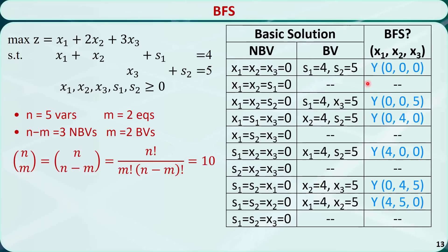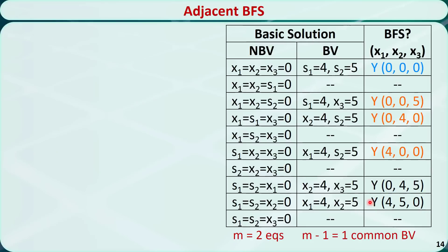Plugging the non-basic variables into the two equations and solving, you will find there are 6 basic feasible solutions and the others are infeasible. For the first BFS, with m equal to 2 equations we need m-1 equal to 1 common basic variable. The basic variables are s1 and s2. Three other BFSs share s1 or s2, so they are all adjacent; two BFSs have neither s1 nor s2, so they are not adjacent.